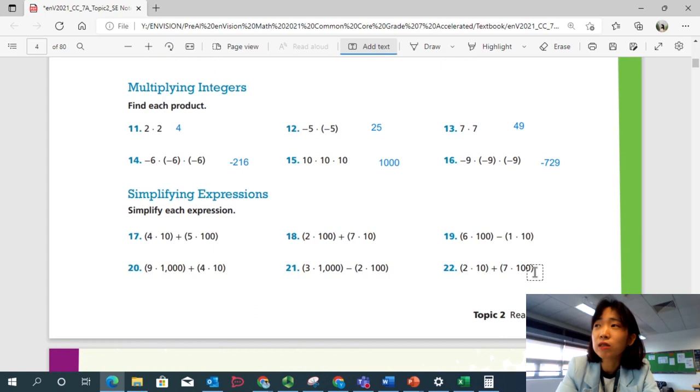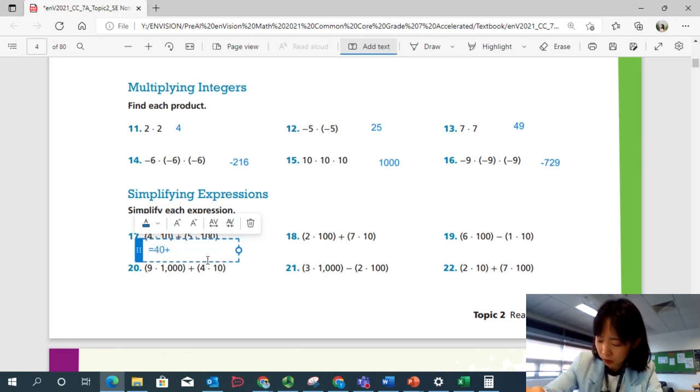Simplifying expressions. You simplify these expressions. What do you do first? You need to solve the parentheses first and add the two products. So 4 times 10 is equal to 40. Plus 5 times 100 is 500. And that will give you 540.